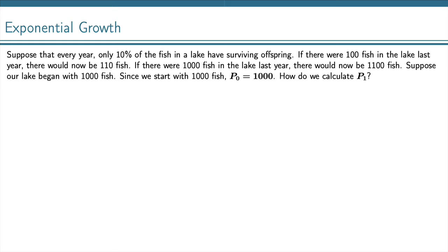Let's do an example. Suppose that every year only 10% of the fish in a lake have surviving offspring. If there were 100 fish in the lake last year, there would now be 110 fish.